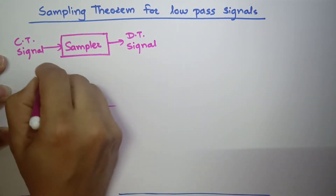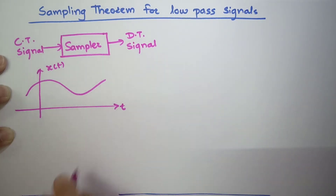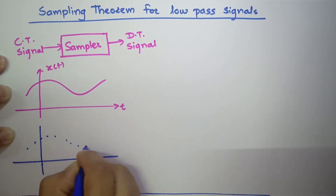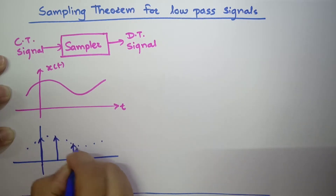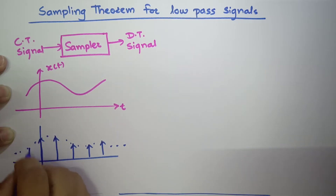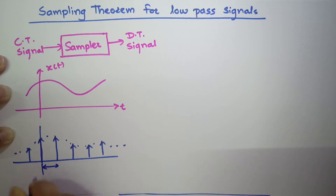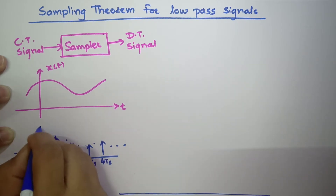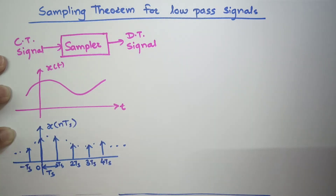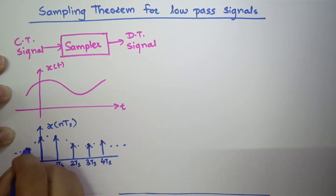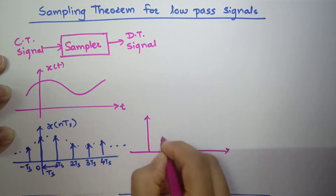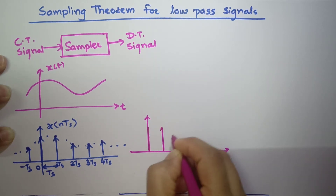We will take one example. Signal x of t — suppose it looks like this — and I want to sample that signal. We multiply it with a train of impulses. We have a uniform time interval called the sampling time interval Ts. This is Ts, this is an integer multiple of Ts, 3Ts, 4Ts and so on. This is minus Ts. So this signal becomes x of nTs. In a discrete time signal, we take only the amplitudes present at these points, so the discrete time signal is a collection of amplitudes only.